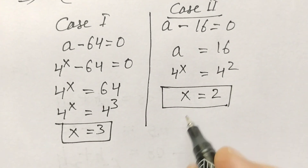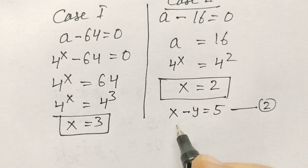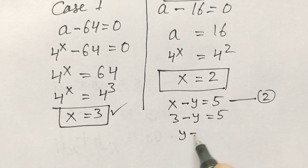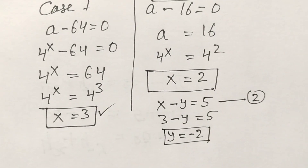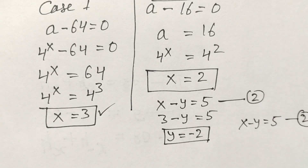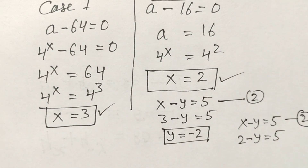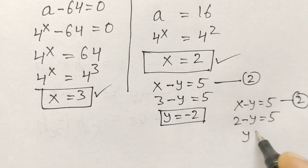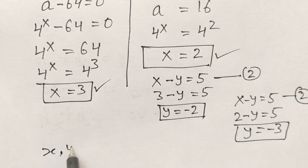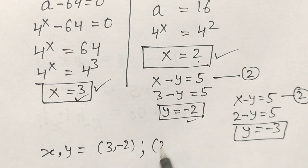Using equation second, x minus y equals 5: when x equals 3, we get 3 minus y equals 5, so y equals minus 2. Again using x minus y equals 5: when x equals 2, we get 2 minus y equals 5, so y equals minus 3. So here we have the set of solutions: (x, y) equals (3, minus 2) and (2, minus 3).